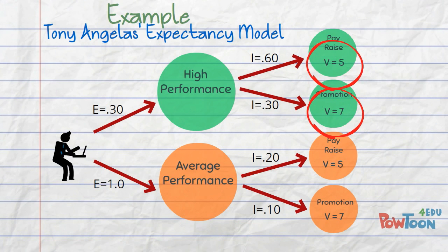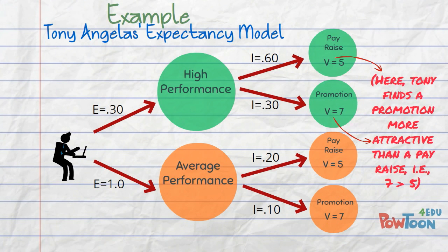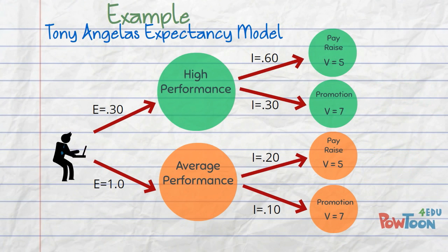Fourth, valence is the anticipated value of the outcomes associated with performance — that is, the extent to which these outcomes are attractive or unattractive to an individual. Finally, force represents the relative degree of effort that will be directed towards various first-level outcomes. We will calculate this soon.